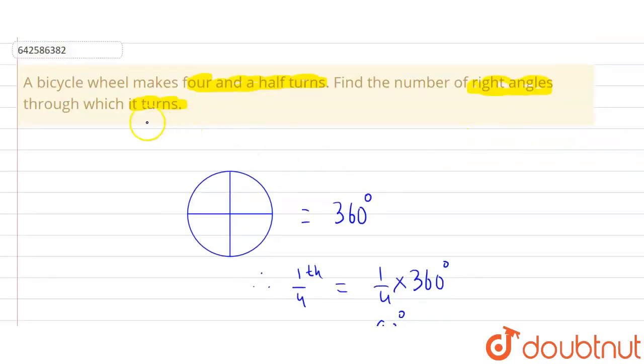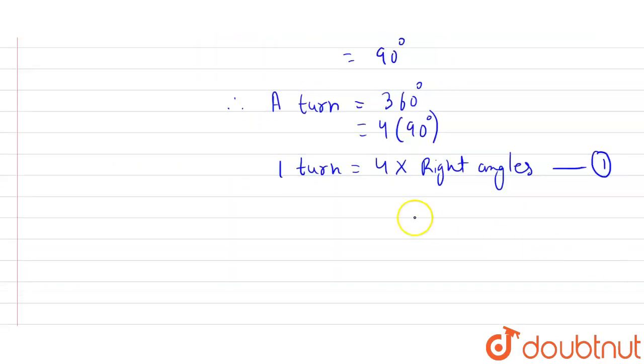Now, what we have asked is that a bicycle makes 4 and a half turns, so find the number of right angles through which it turns. Since one turn equals to 4 right angles.